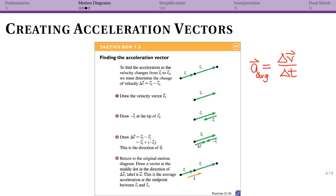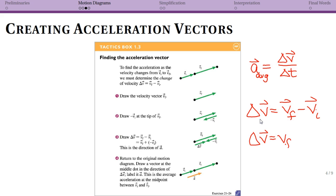The delta symbol means final minus initial, so any time you have a delta, that's your final value minus your initial value. Note that this is vector subtraction. The way to handle vector subtraction — covered in the vector video — is to recognize that subtracting a vector is the same as adding its negative, and it's really important to do it that way.